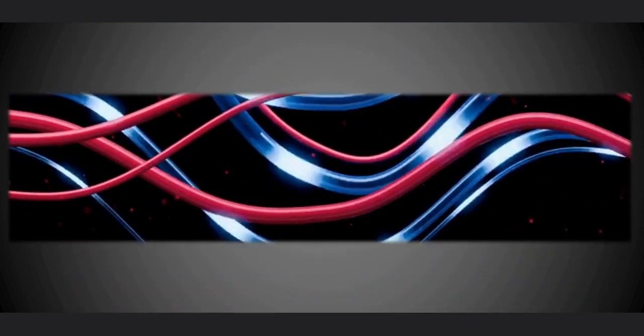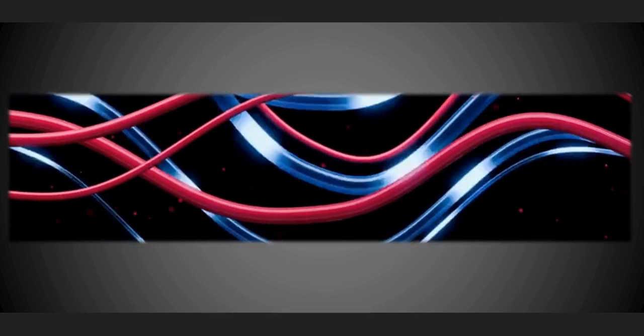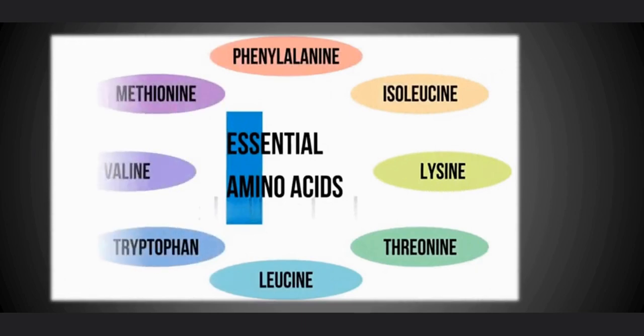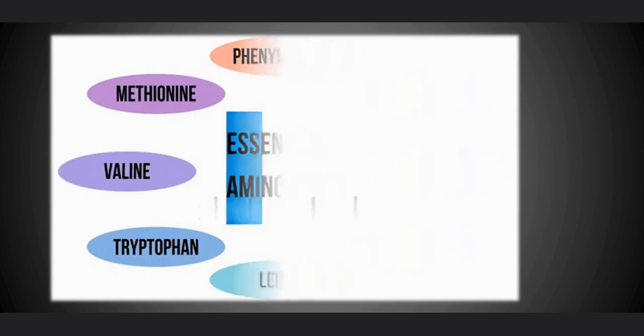Out of the 20 amino acids required for normal growth and development, 12 can be manufactured by the human body thus, they are considered non-essential. The other 8 have to be obtained from the foods we eat thus they are termed essential amino acids and without them, tissue growth and repair is impaired.